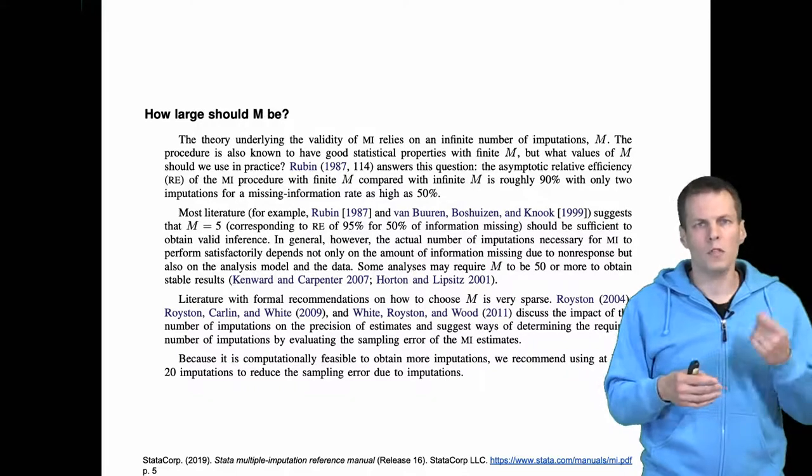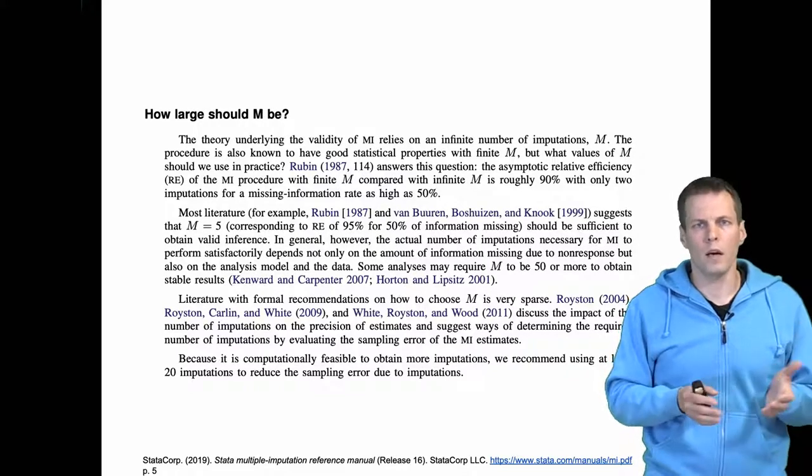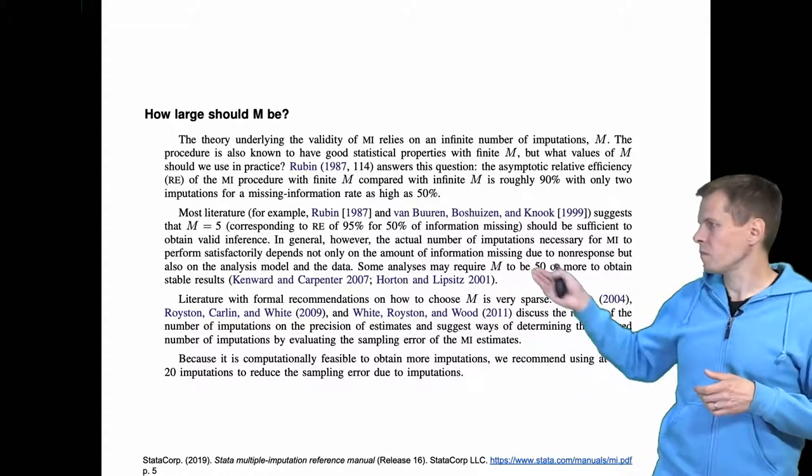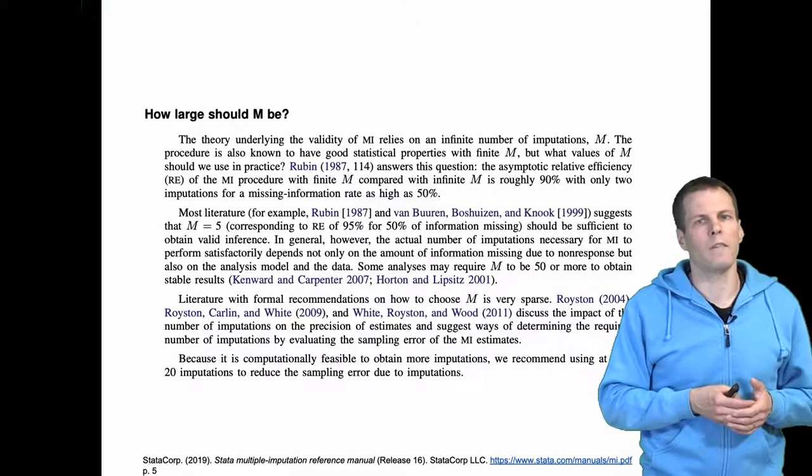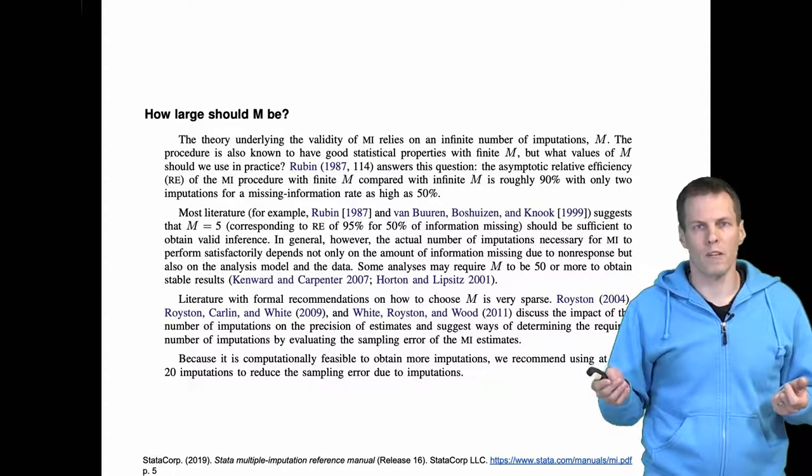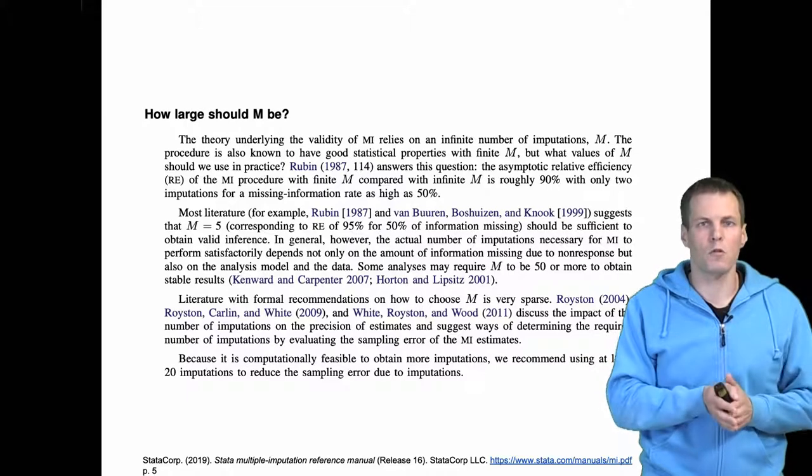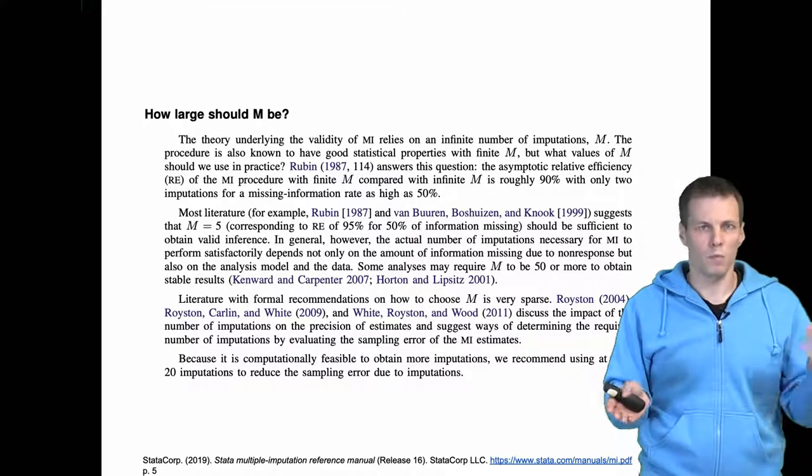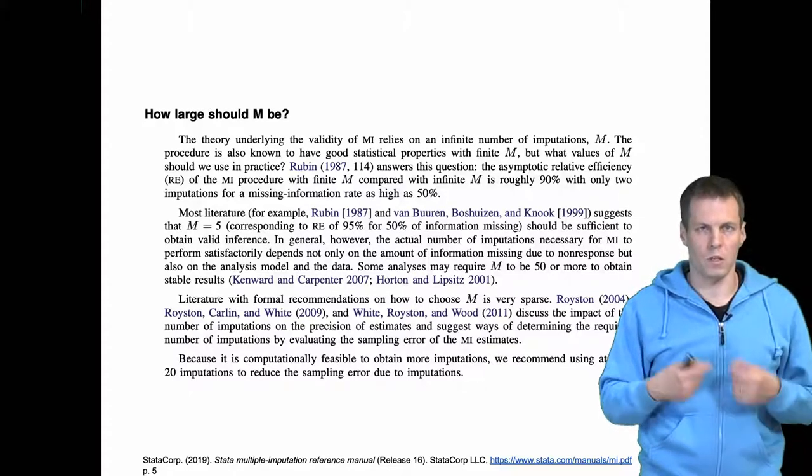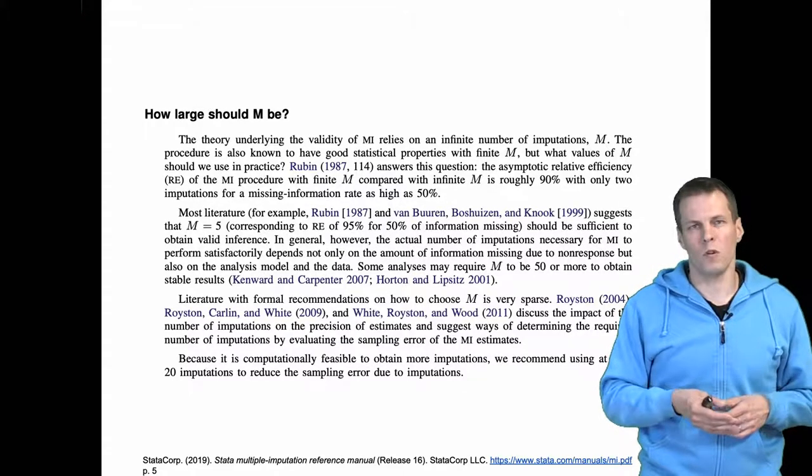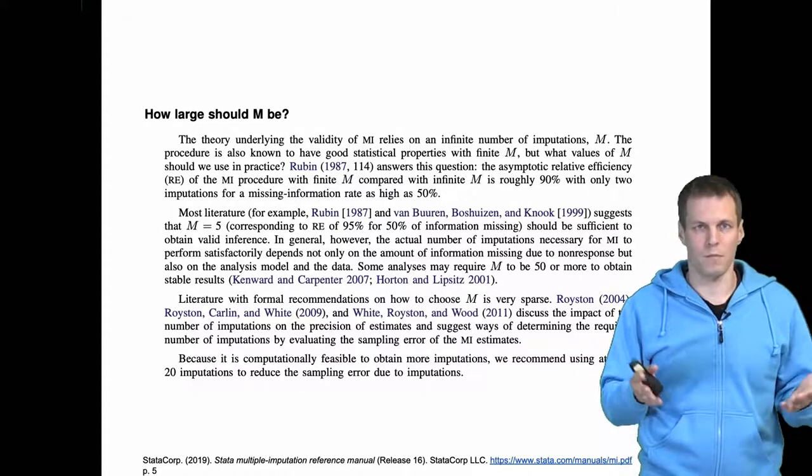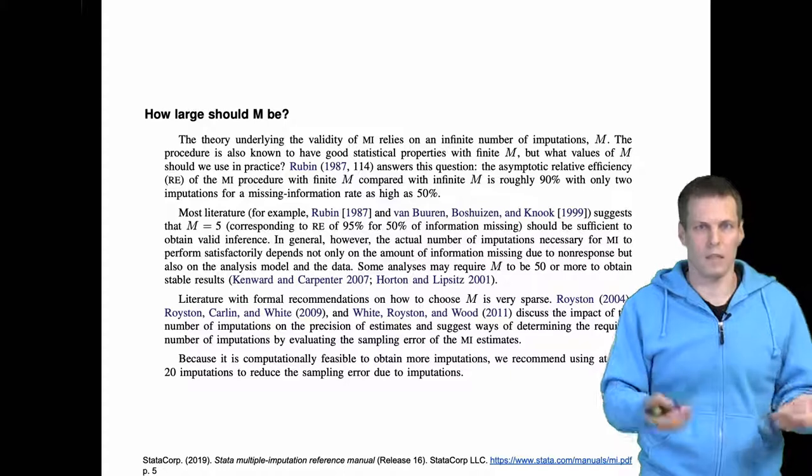So most texts recommend between 20 and 100 imputations. More is always better but there seems to be a consensus that after about 20 imputed data sets then the gains start to be very small. So the recommendations of how many imputations you should do are between 20 and 100. You can always try different values and see how it works, and if you can do 100 imputations in a minute then there's really no reason to do less because the only reason you would do less is to save time.